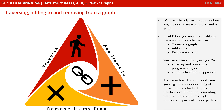We've already covered the various ways we can create or implement a graph. In addition, you need to be able to trace and write code that can traverse a graph, add an item and remove an item. You can achieve this by either using an array in procedural programming or object-orientated techniques. The exam board recommends you gain a general understanding of these methods backed up by practical experience implementing them, as opposed to trying to memorise a particular code pattern.